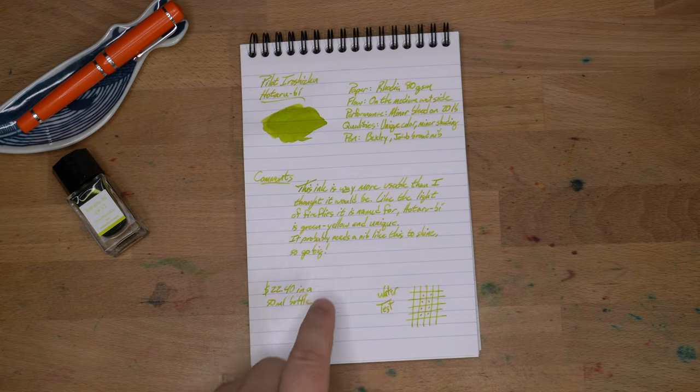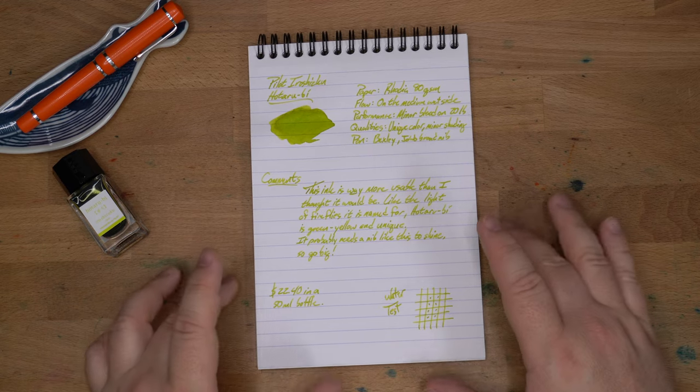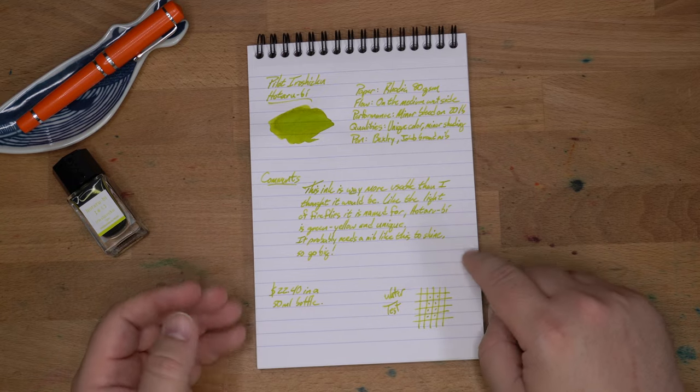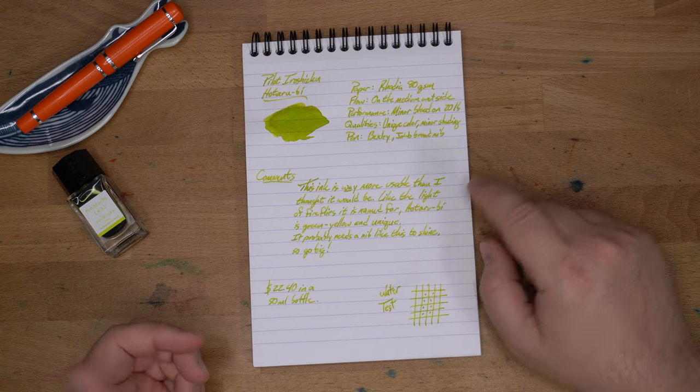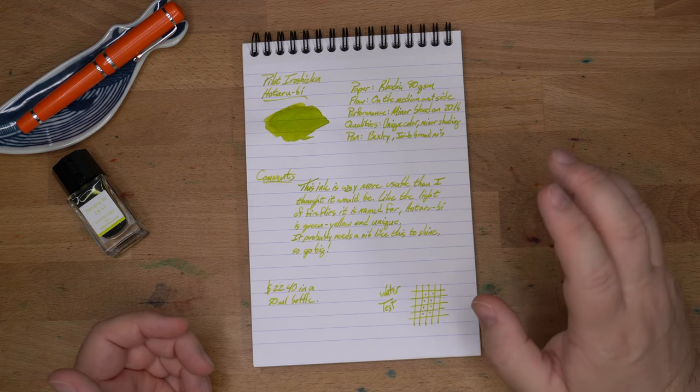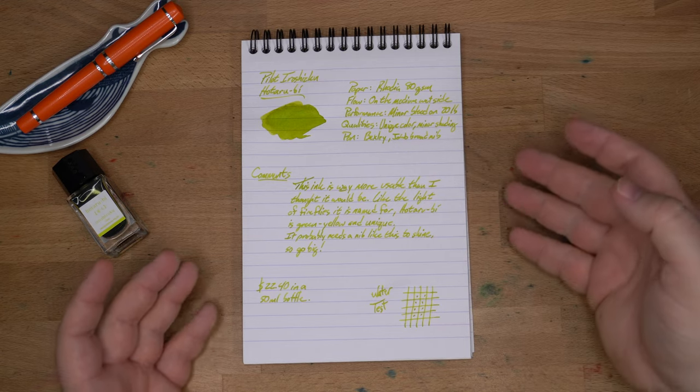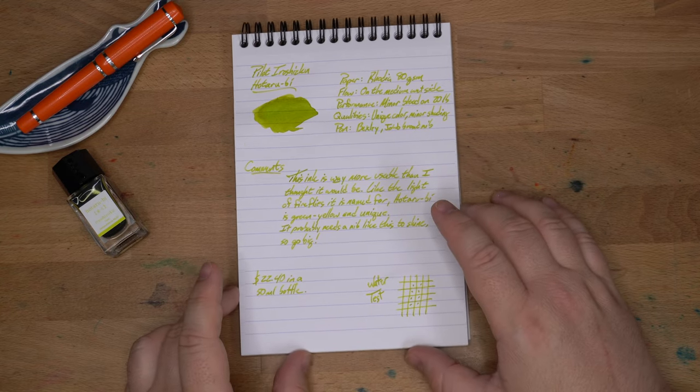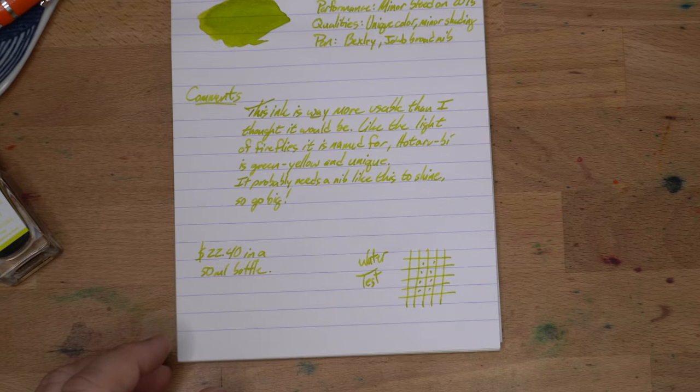I also want to say it looks a little bit more yellow in person than it's coming through on the camera. This is a tricky ink to photograph, and it's much more yellow in person. So think about fireflies or lightning bugs, whichever one you call them. I really didn't think that this was going to be usable. I thought it was going to be far too light, but it turns out you get a little bit of shading. You get a nice bright color, although it is not as green as this. I want to go ahead and make sure that y'all know. All right, let's zoom in.